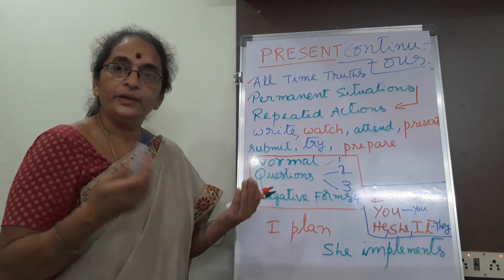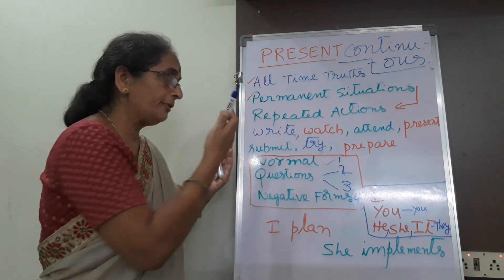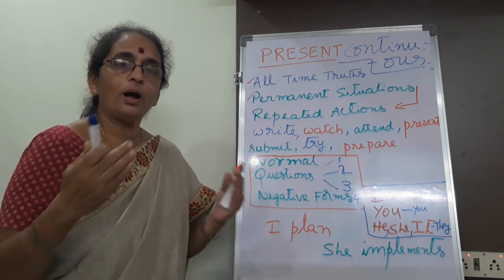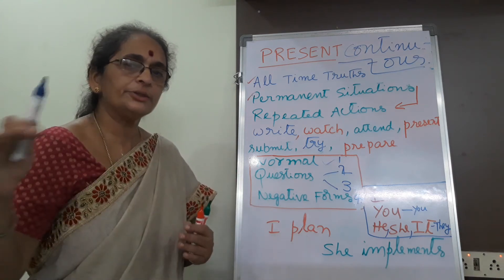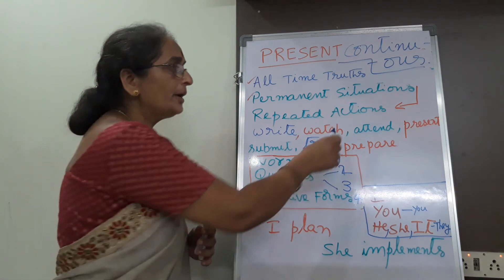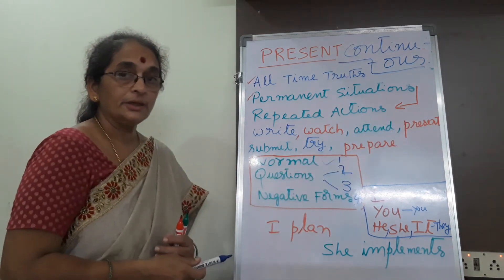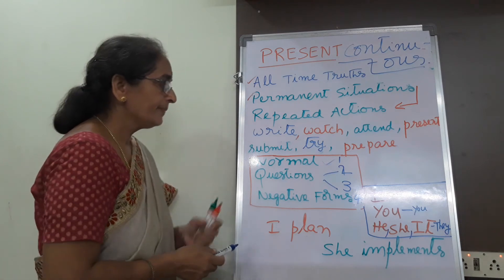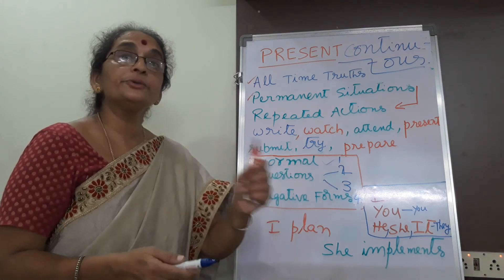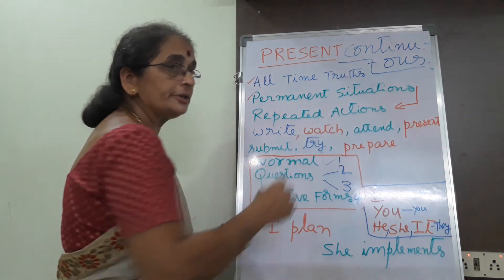Now with WH questions: What are you writing? Or, why are you writing this story? Or, where are you writing this story? You take any version of WH — why, where, what, who — whatever applies according to the situation. Why are you watching TV? What are you watching on TV? Why are you attending this meeting? When are you attending this meeting? Why are you presenting this PowerPoint? How are you presenting it? Why are you submitting this report? Why are you trying this sum? How are you trying this sum? What are you preparing for this project report?